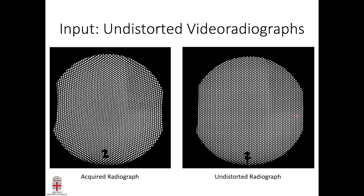Another input is the undistorted video radiographs. One problem with radiography is distortion — on the left you see the acquired radiograph with a grid on the x-ray image intensifier. Everything should be a circle, but on the edges there is distortion, which is a problem with pinhole cameras. We have a method to undistort these radiographs, and we use an XMALab software which I'll cover in another video.